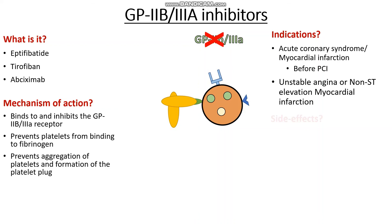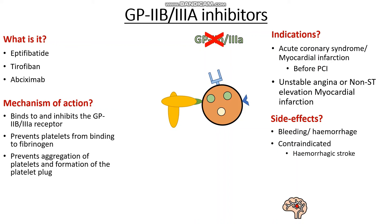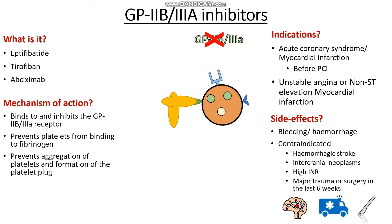So when do we actually not use our GP2B3A inhibitors, and what are some side effects? Well, the biggest one with these drugs is bleeding, and as a result all of the contraindications are focused around this theme of bleeding. We can't use a GP2B3A inhibitor if the patient has had a hemorrhagic stroke in the last few months. We also can't use them if the patient has an intracranial neoplasm — a tumour in the brain — which may bleed and cause more brain damage. We can't use them if the patient has a very high or variable INR. And lastly, we can't use them if the patient has had trauma or major surgery in the last six weeks, as their risk of bleeding is again quite high.